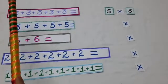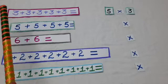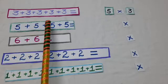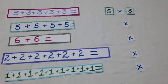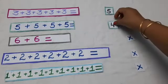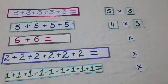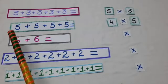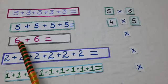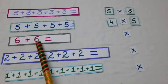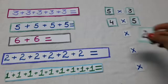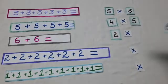In the next question, 5 is there. So, let's count how many times 5 is there: 1, 2, 3, 4 — 4 times 5. Similarly, in the third question, we are given the number 6. It is coming here how many times? 1, 2 — 2 times. So, how can we write it into the multiplication form? 2 multiply 6.